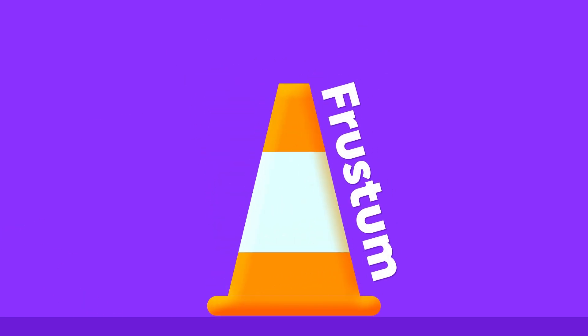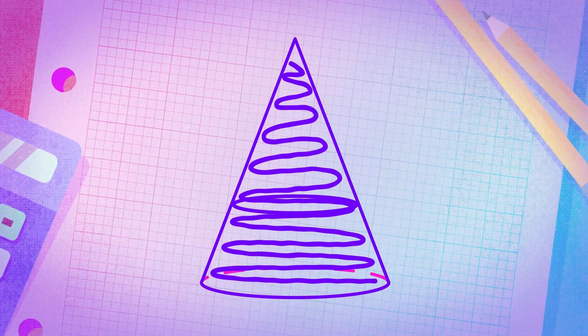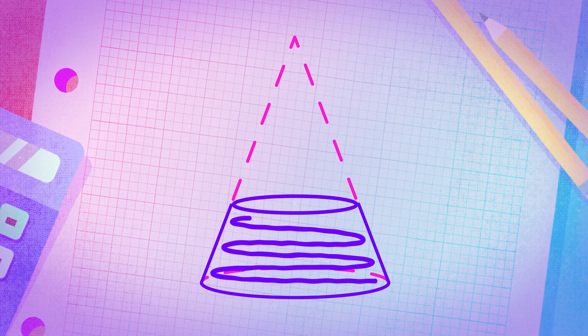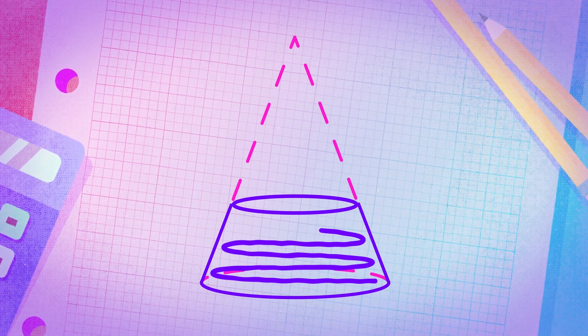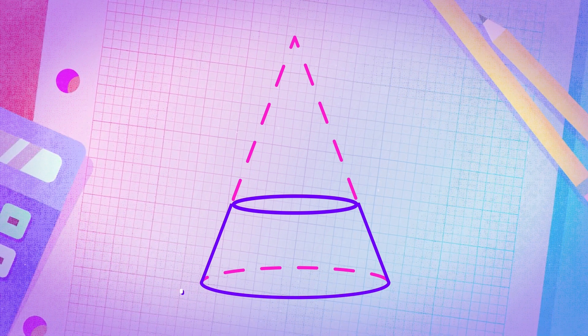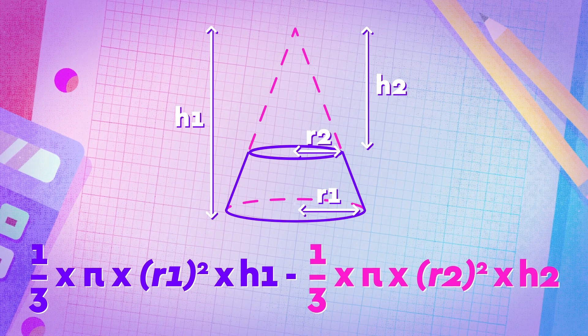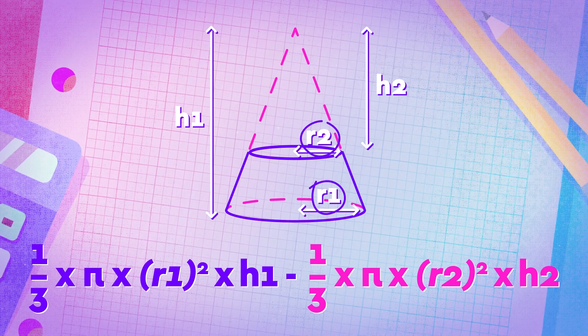A frustum is the shape formed if we take a normal cone and cut a piece off the top. The shape we are left with is almost like a 3D trapezium. The volume of this shape does not have a specific formula. We calculate its volume by starting with the volume of the original cone, then subtracting the volume of the smaller piece cut off from the top, which is also a cone. As the cone is a symmetrical figure, we calculate the volume of the frustum by taking the volume of the big cone and subtracting the volume of the smaller cone. The difference in the two volumes relates to the different radii and heights of the two cones.